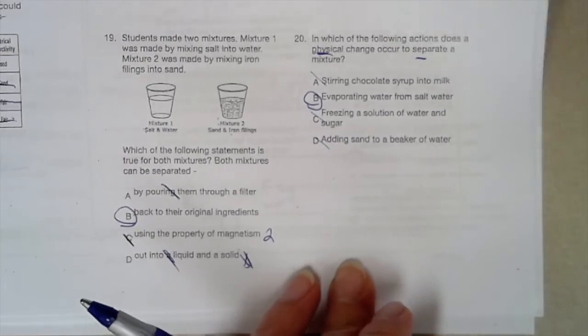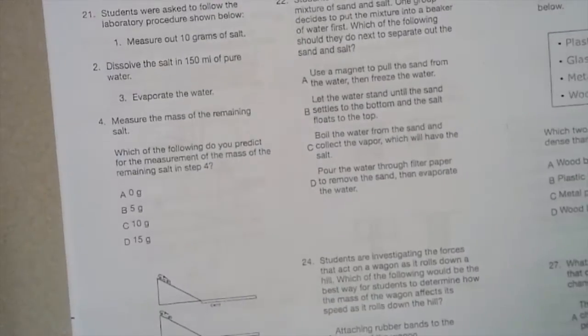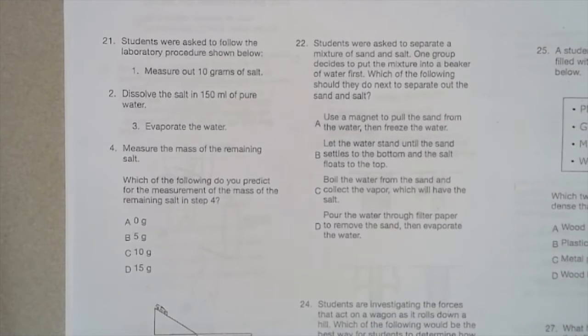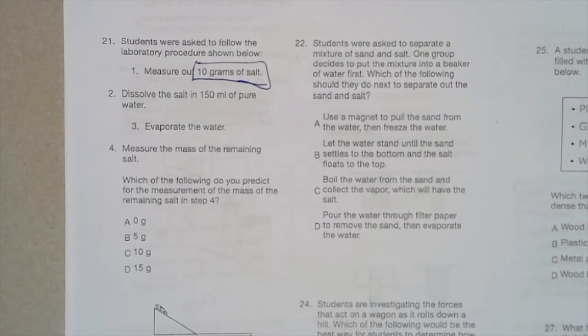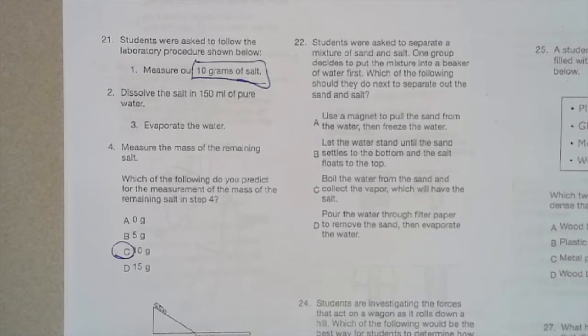Moving on to the next page, number 21. Students were asked to follow the laboratory procedure shown below. One, measure out 10 grams of salt. Two, dissolve the salt in 150 milliliters of pure water. Three, evaporate the water. Four, measure the mass of the remaining salt. Which of the following do you predict for the measurement of the mass of the remaining salt in step four? How much salt did we start with? 10 grams. So how much salt are we going to end with? 10 grams. Matter is neither created nor destroyed. It is conserved. So when you mix it with that water and when you separate it back out, it's going to stay the same.